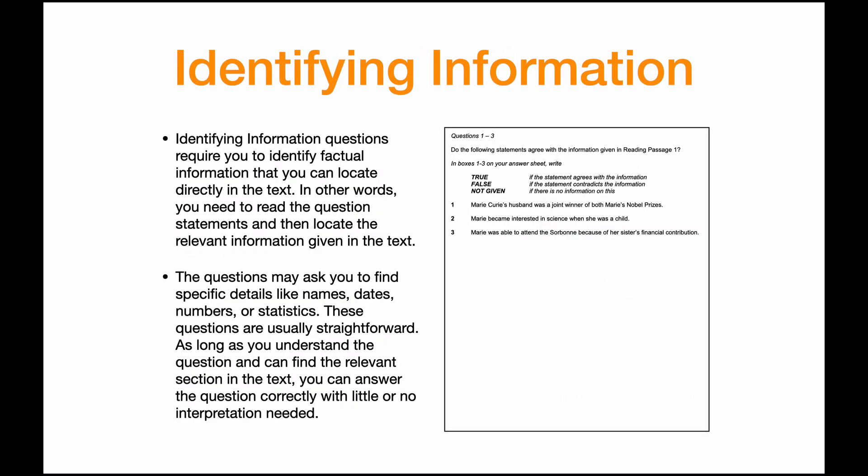Identifying information questions require you to identify factual information that you can locate directly in the text. In other words, you need to read the question statements and then locate the relevant information given in the text. The questions may ask you to find specific details like names, dates, numbers, or statistics. These questions are usually straightforward — as long as you understand the question and can find the relevant section in the text, you can answer correctly with little or no interpretation needed.